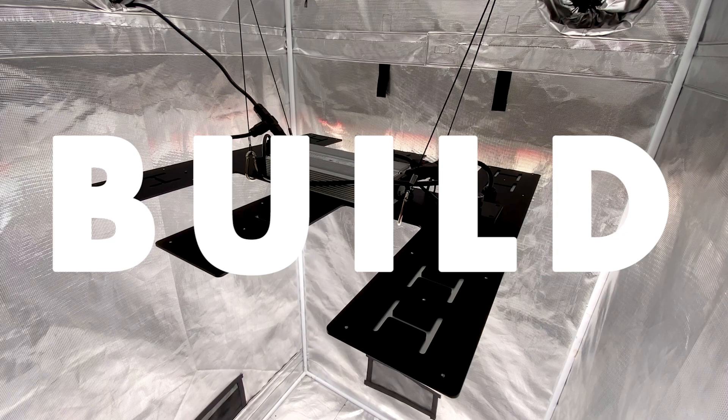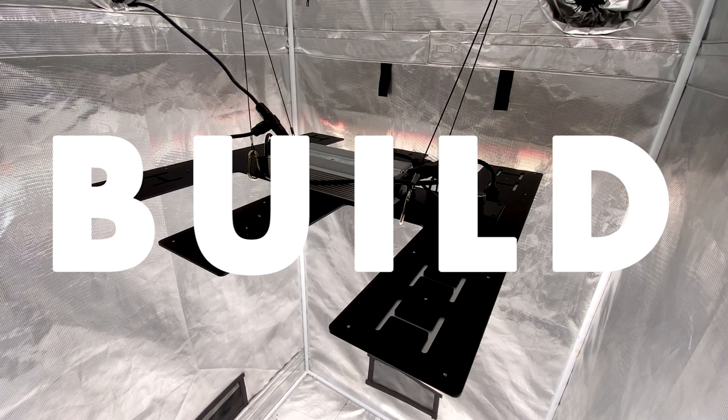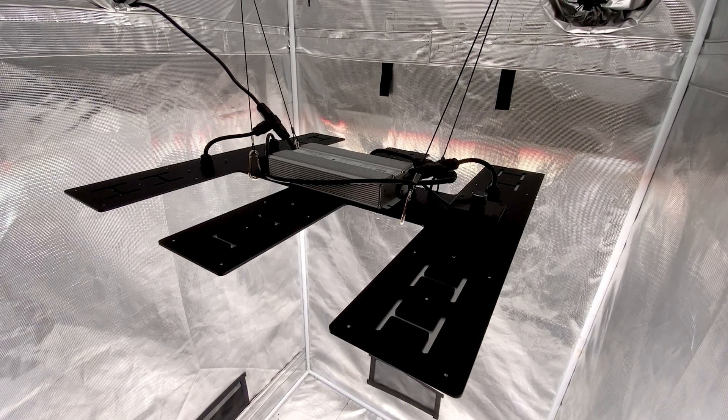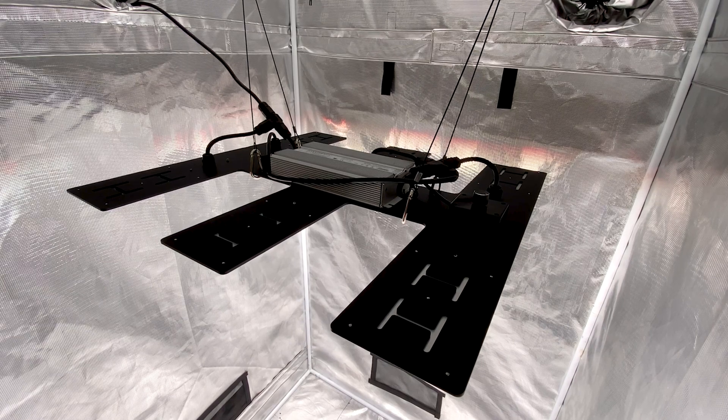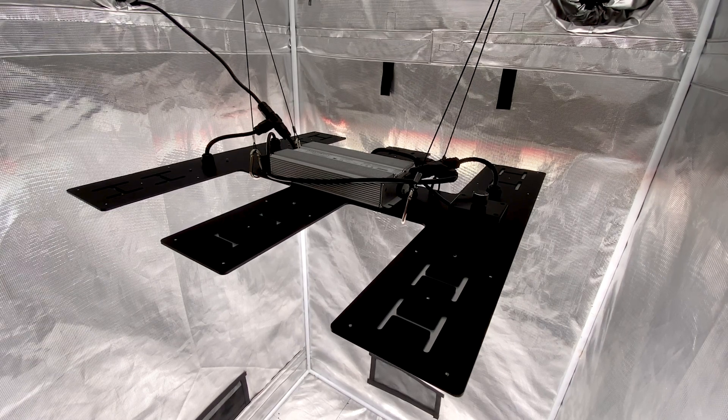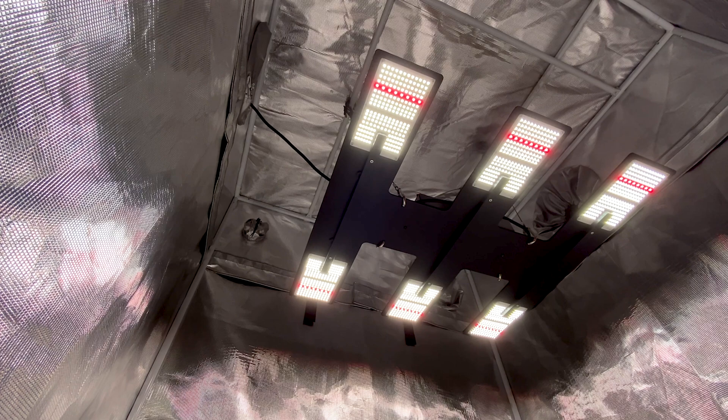The HLG Blackbird measures just over 2 feet by 2 feet or more precisely 26 by 26.75 by 2.75 inches with a weight of about 17.5 pounds.